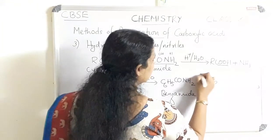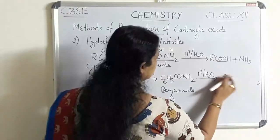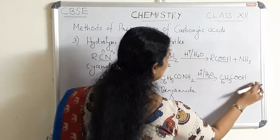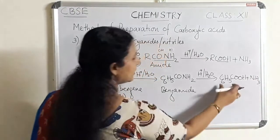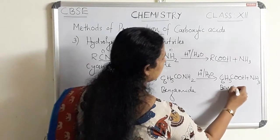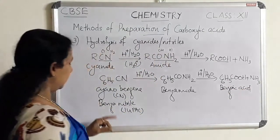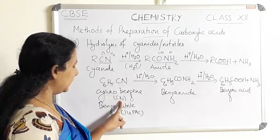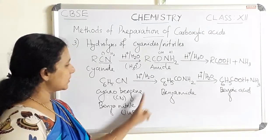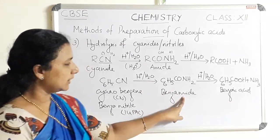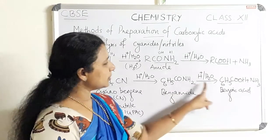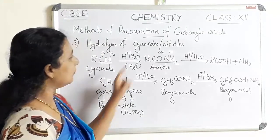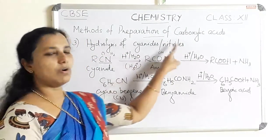Benzamide on further hydrolysis gives the corresponding acid C₆H₅COOH plus NH₃, where ammonia is the byproduct. C₆H₅COOH is benzoic acid. So cyanobenzene (common name) or benzonitrile (IUPAC name) on hydrolysis gives benzamide as the intermediate, which on further hydrolysis gives benzoic acid as the end product. This is the reaction of getting carboxylic acid from cyanides or nitriles.